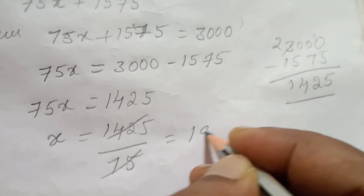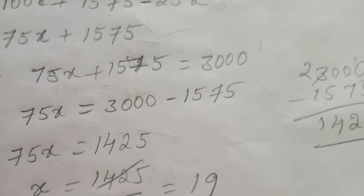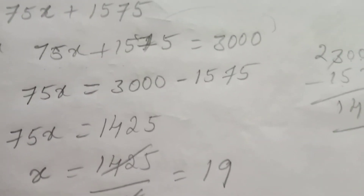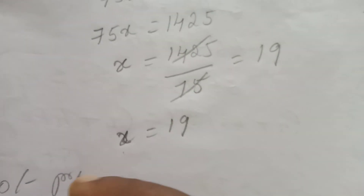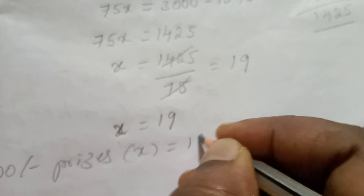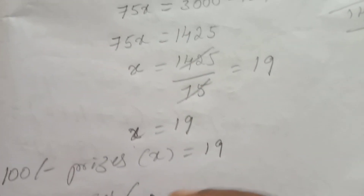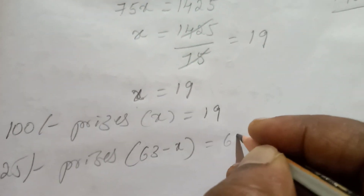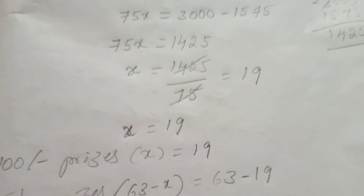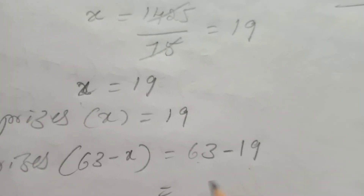Dividing: x equals 1,425 divided by 75, which equals 19. So x equals 19. The number of 100-rupee prizes is 19, and the number of 25-rupee prizes is 63 minus 19, which equals 44.